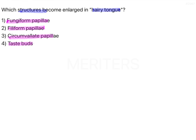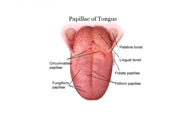Let's revise the papillae of the tongue. In the image we can see the options: filiform papillae is here, fungiform papillae is here, circumvallate papillae is here, and the taste buds are also over the same area.